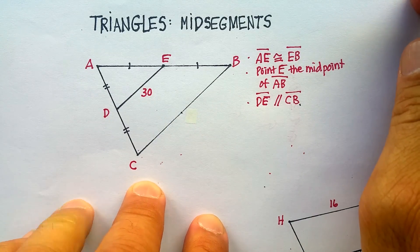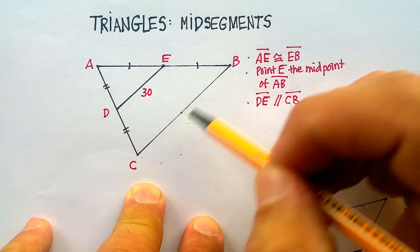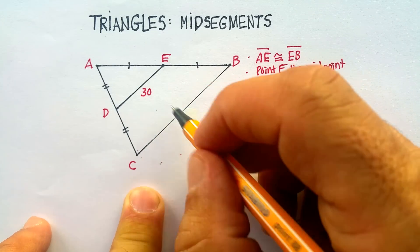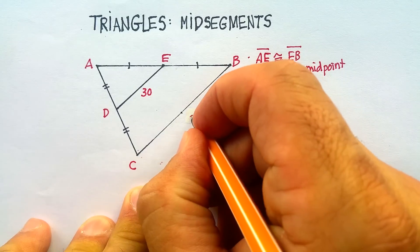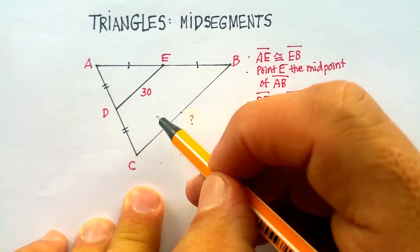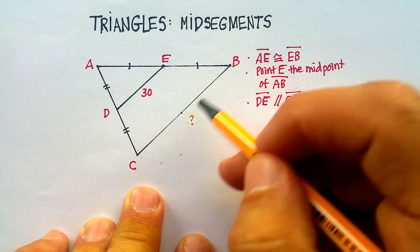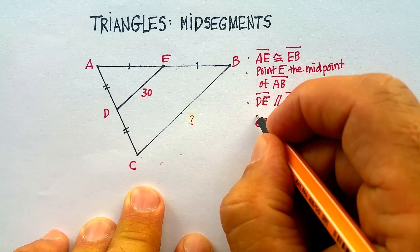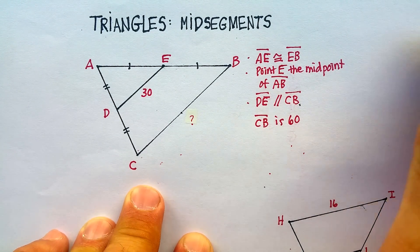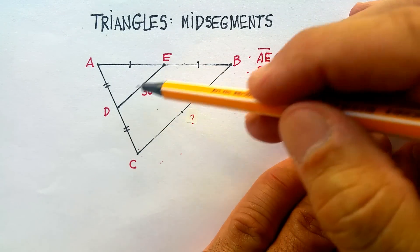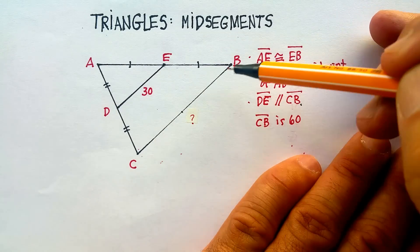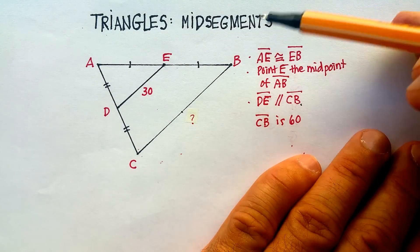So that's one thing I know. I also know that since it is the mid-segment of the side, I can actually calculate line segment CB — it's basically twice as much as the smaller one. So if I know that DE is 30 and it connects the mid-segments of the triangle, then this side is actually 60. So CB is 60 units. When I find the mid-segments of this side, it creates two parallel lines, and the mid-segment is half the size of the opposite side.